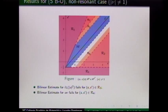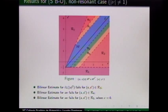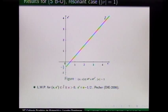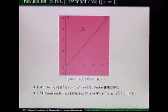For the resonant case, we have the Pescher result: local well-posedness at the same half-line, except for the endpoint. We prove C2 ill-posedness for all the rest except for the endpoint. For the endpoint, we just proved that the bilinear estimate fails. So the Pescher result is sharp except for the endpoint.